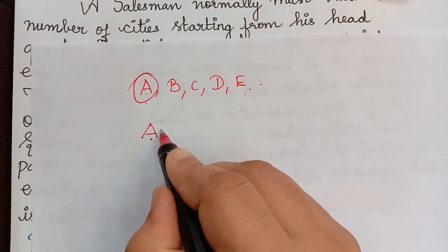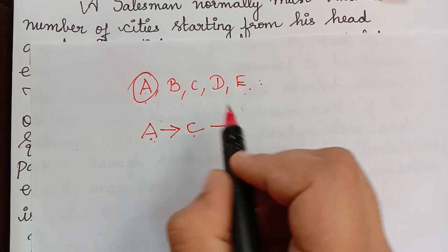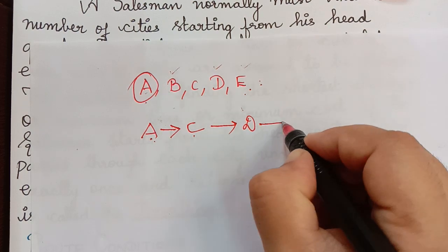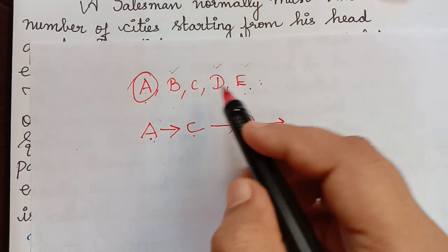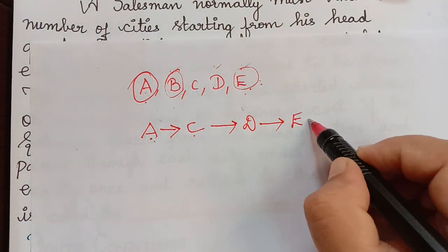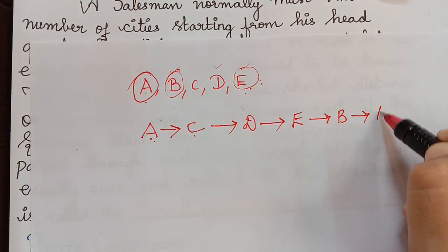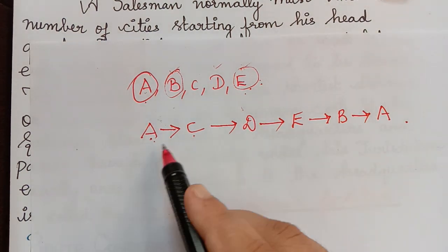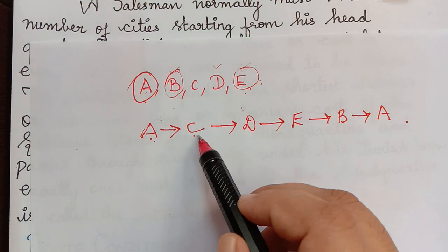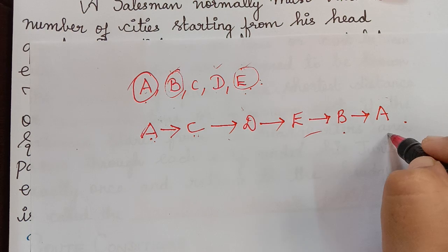So for example, if he visits city C from A then he has to visit a new city either B, D or E. Maybe if I consider it to be D then he has to visit another new city B or E. So if I take it to be E for example, then he has to visit B and then he has to return back to his headquarters A. So now if you see the salesperson started from city A and he has visited every other city and finally he has reached the city A again.